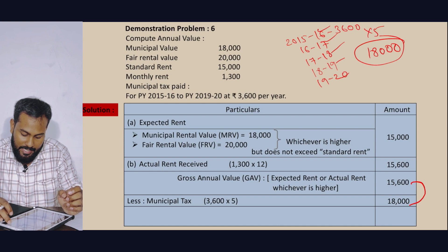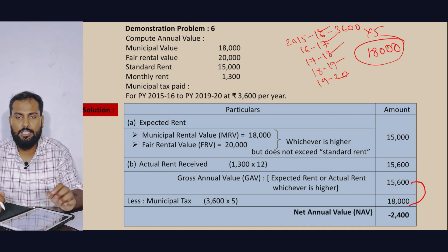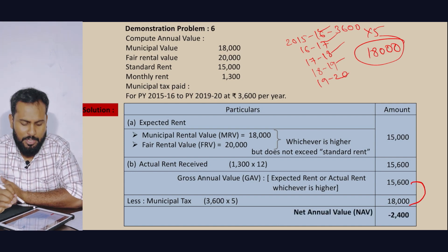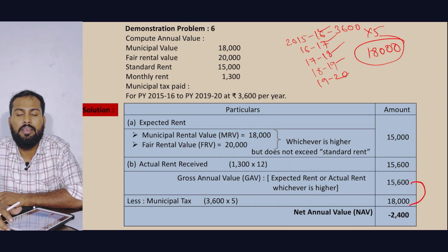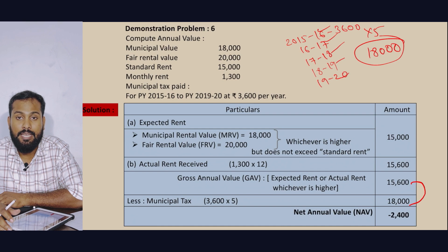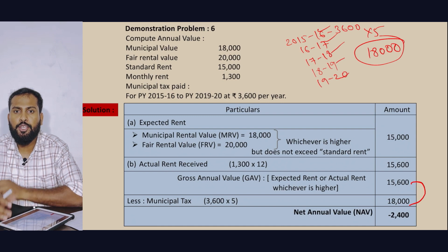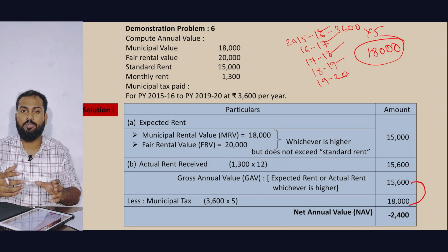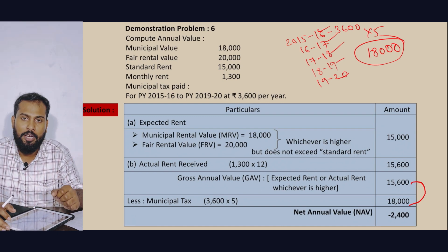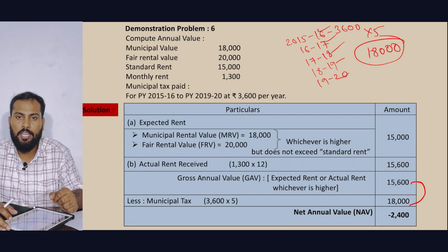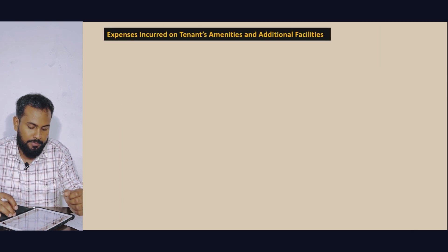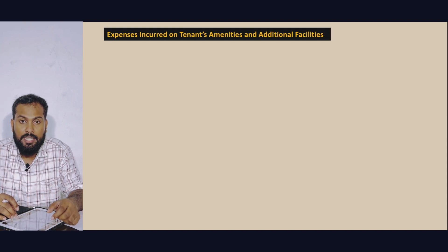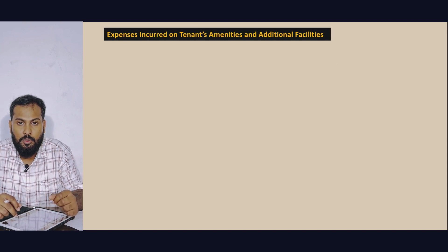This results in a negative annual value. Municipal tax is accumulated — that's the key point. In years where accumulated municipal tax exceeds the Gross Annual Value, the Net Annual Value becomes negative. We will discuss this topic further.